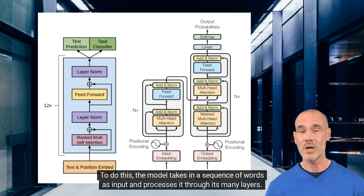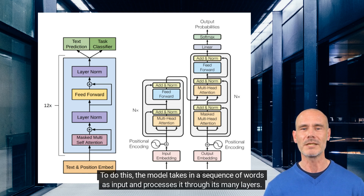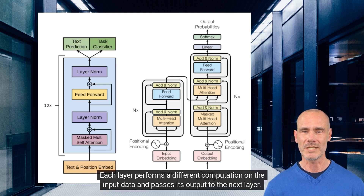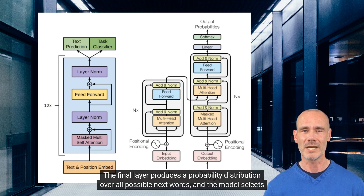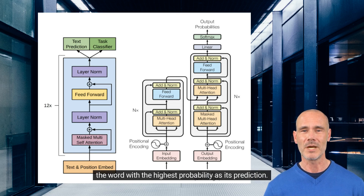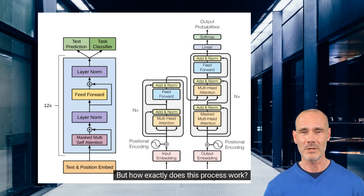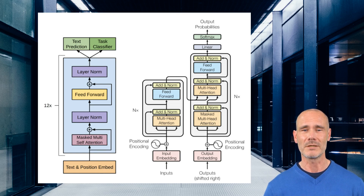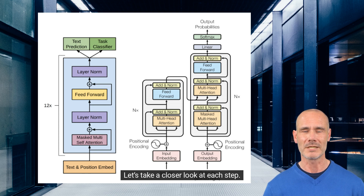To do this, the model takes in a sequence of words as input and processes it through its many layers. Each layer performs a different computation on the input data and passes its output to the next layer. The final layer produces a probability distribution over all possible next words, and the model selects the word with the highest probability as its prediction. But how exactly does this process work? Let's take a closer look at each step.